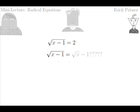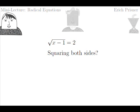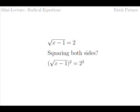Couldn't we simplify the square root of x minus one first? No, that's not possible. Although square roots of products and quotients can be simplified, there is no formula for the square root of a sum or of a difference. But couldn't we just square both sides of the equation? This way the radical would go. Yes, that's it. The square of a square root of something is just that something. So on the left side we just get x minus one. On the right side we get the square of two, which equals four. Overall we get x minus one equals four.